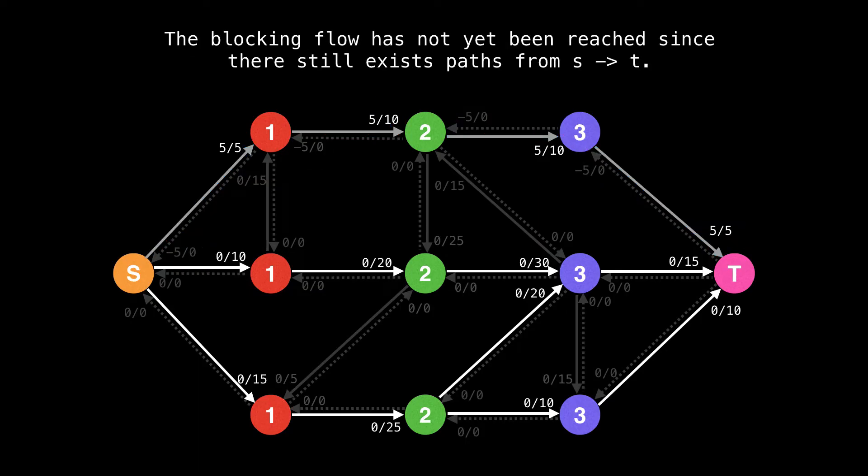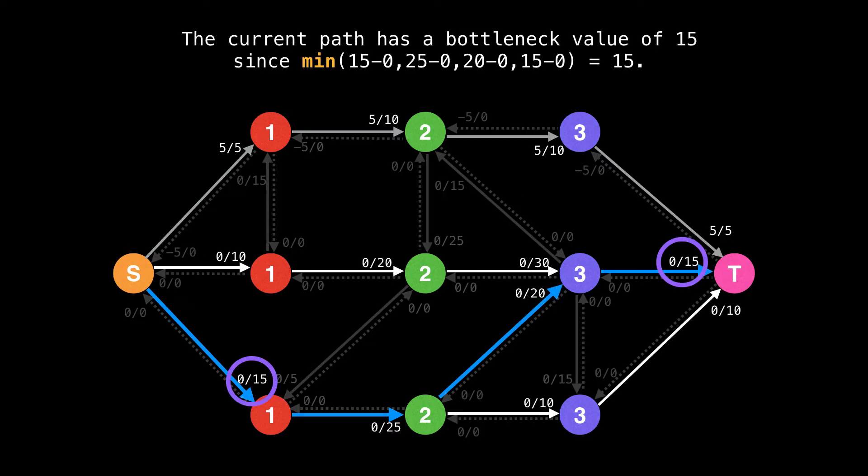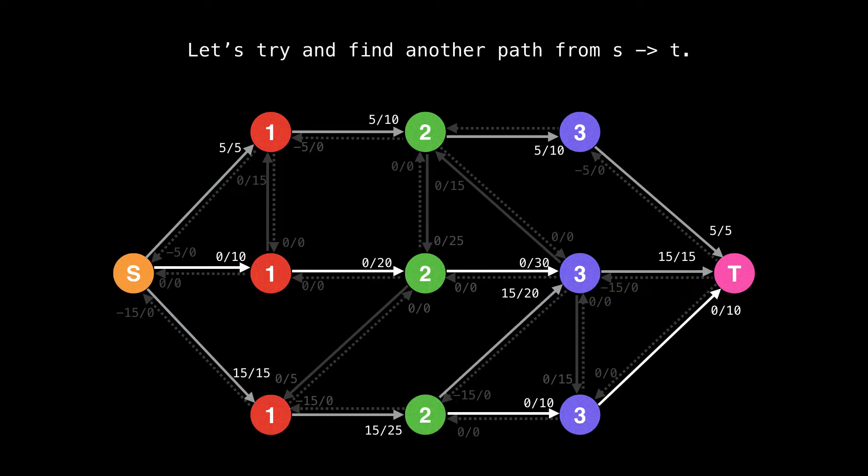If you inspect the graph, the blocking flow has not yet been reached, since there still exists paths from s to t. Start once again at the source and do a depth first search forwards. Now we found another path. This one has a bottleneck value of 15. So augment the flow along the path by 15 units. Now let's try and find another path from s to t.